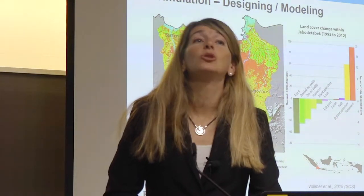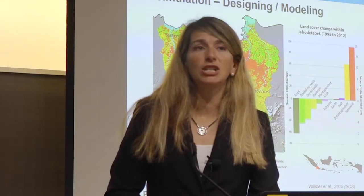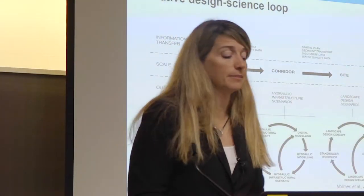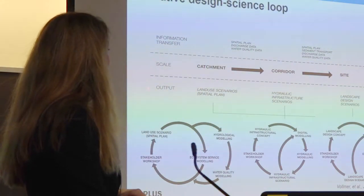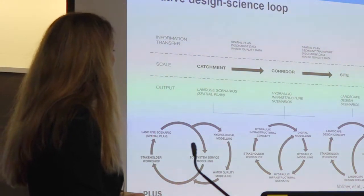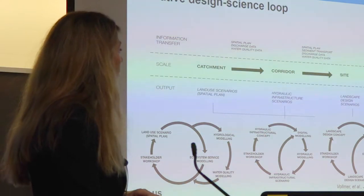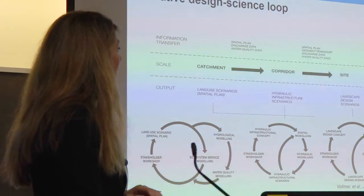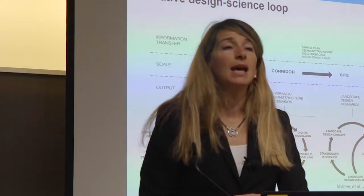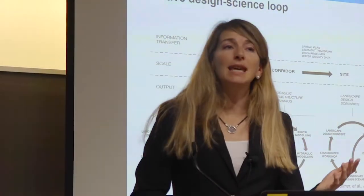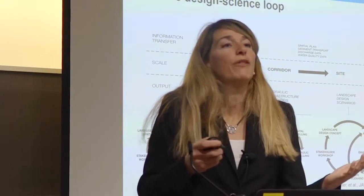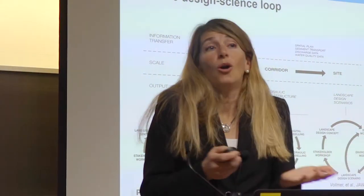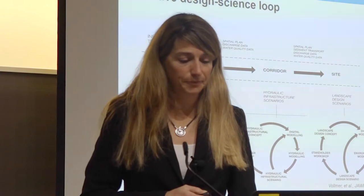We have many land use changes that have a direct effect on the design downstream. Just doing design down there is not going to help, because what is happening upstream in the catchment area is going to have a huge impact on what is happening downstream. So we decided to do simulations at three different scales: the catchment scale, the corridor scale, and the site scale. This is key because just a solution at one scale has no effect on what you really want to achieve.